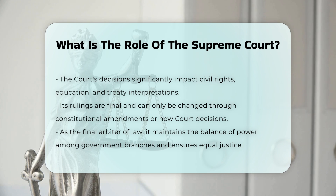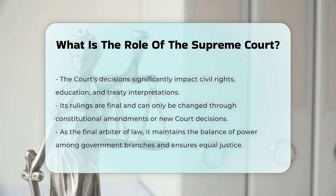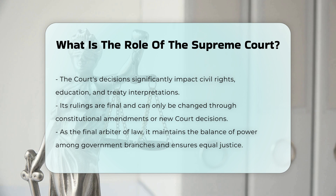Role in the Constitutional System. As the final arbiter of the law, the Supreme Court ensures equal justice under law and functions as the guardian and interpreter of the Constitution. It maintains the balance of power among the branches of government, preventing any one branch from exceeding its Constitutional authority.